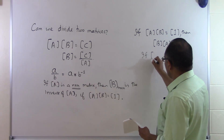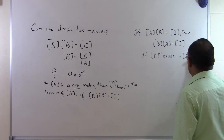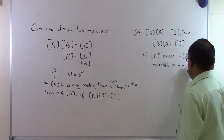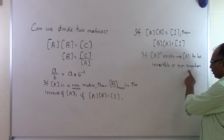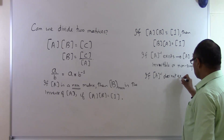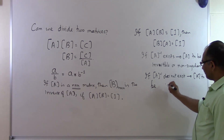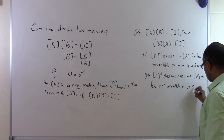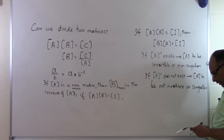If A inverse exists, we call A invertible or non-singular. If A inverse does not exist, then A is considered to be singular, or not invertible. These are the terms used when discussing the inverse of matrices.